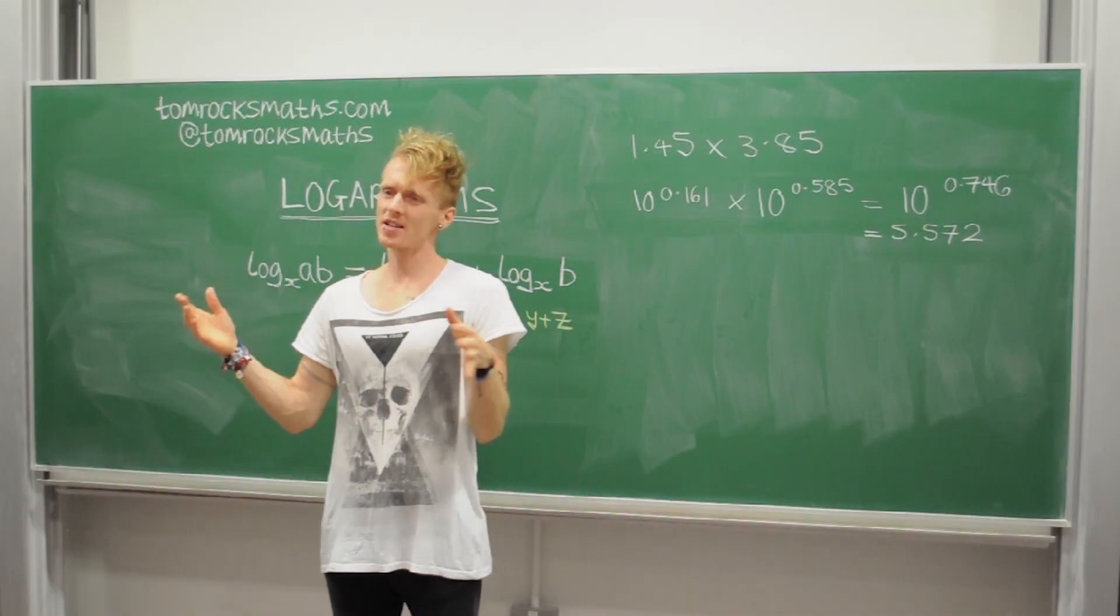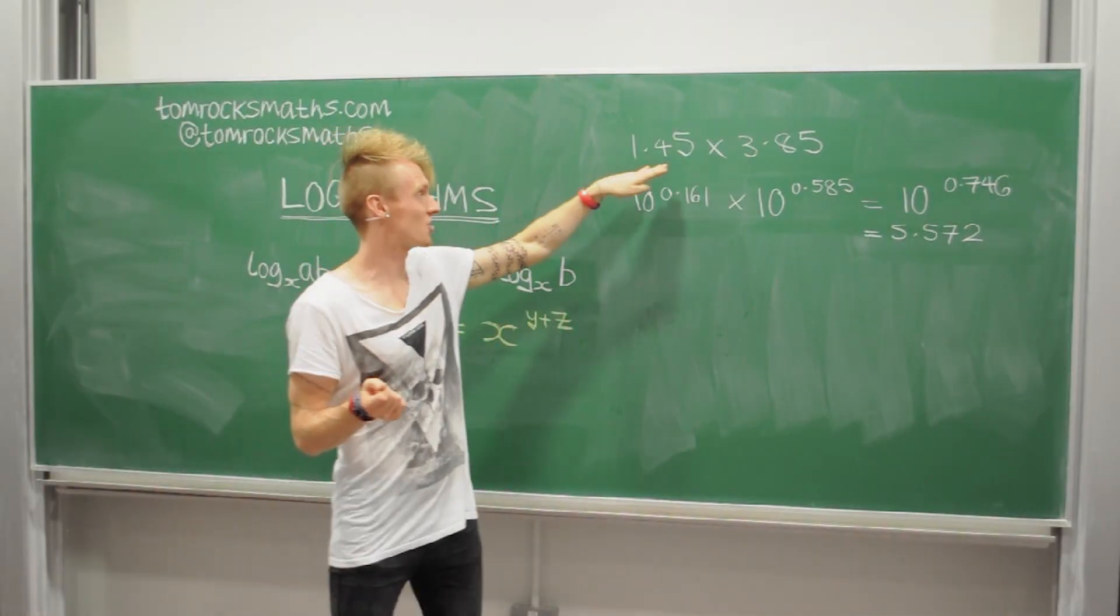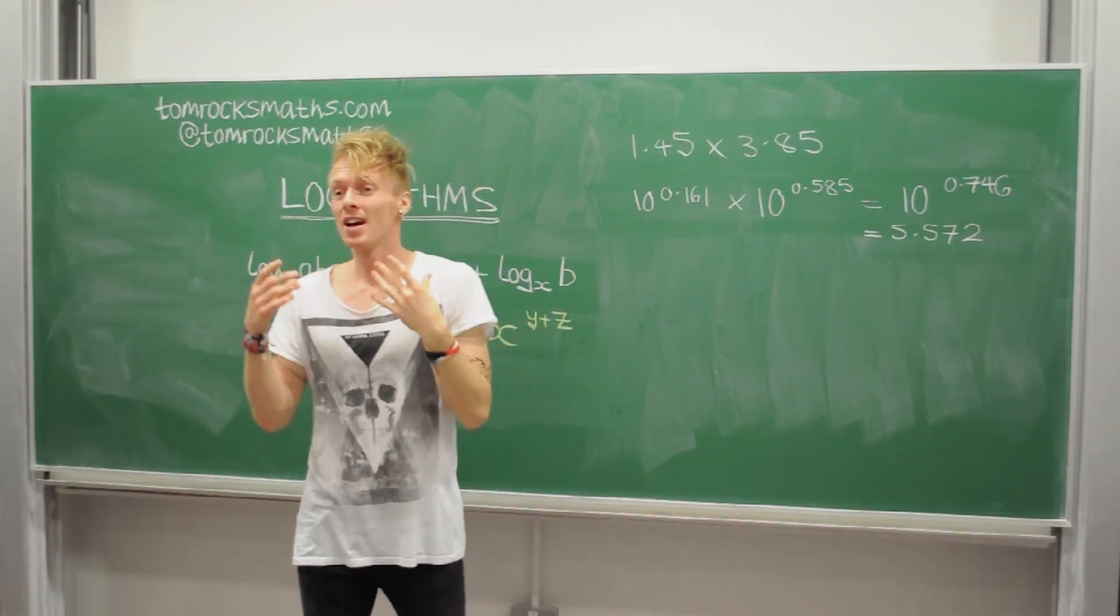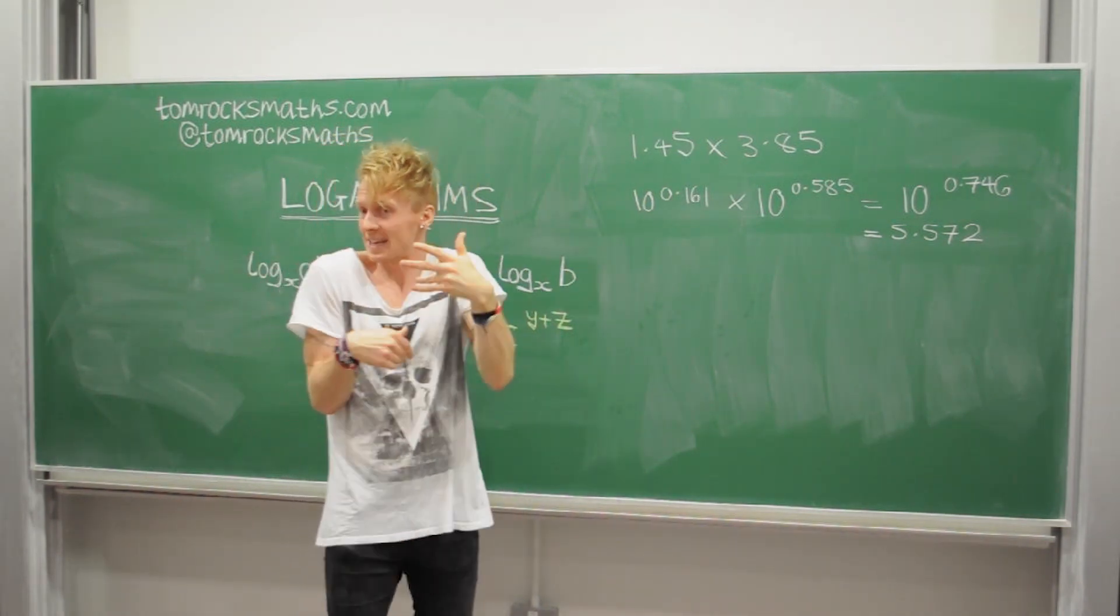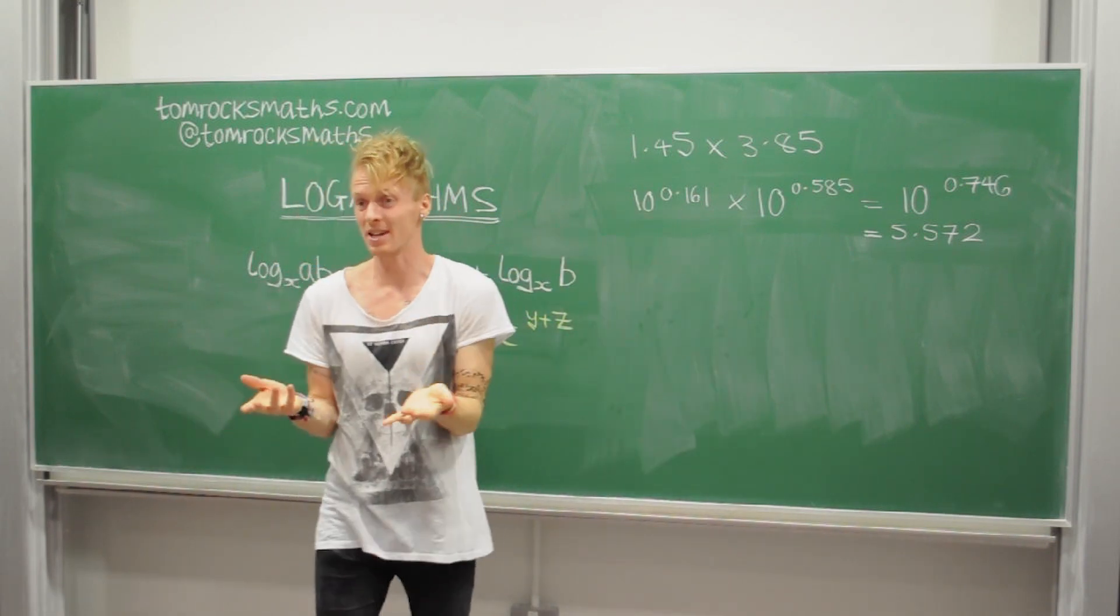Now, at first glance, this may seem more difficult than just doing the original multiplication. And you're probably right. It's adding extra steps and you have to work out powers of 10, decimal powers of 10. It's quite tricky.